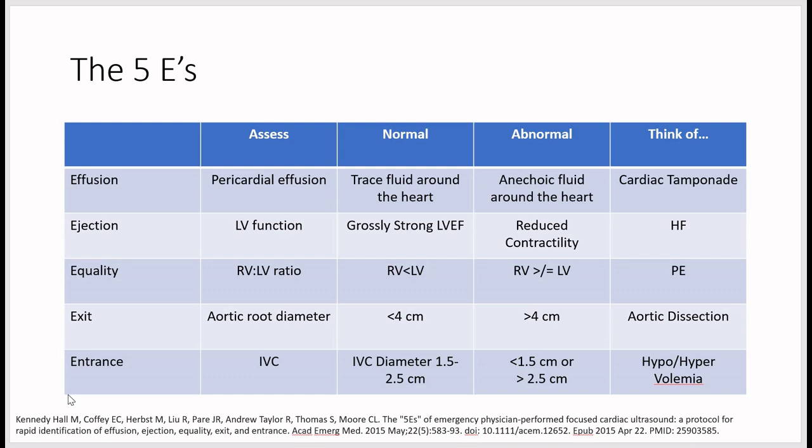For equality, compare the RV-to-LV size ratio. If the RV is smaller than the LV, that's normal. If the RV is greater than or equal to the LV in size, that's abnormal, and a dilated RV should prompt consideration of pulmonary embolism.